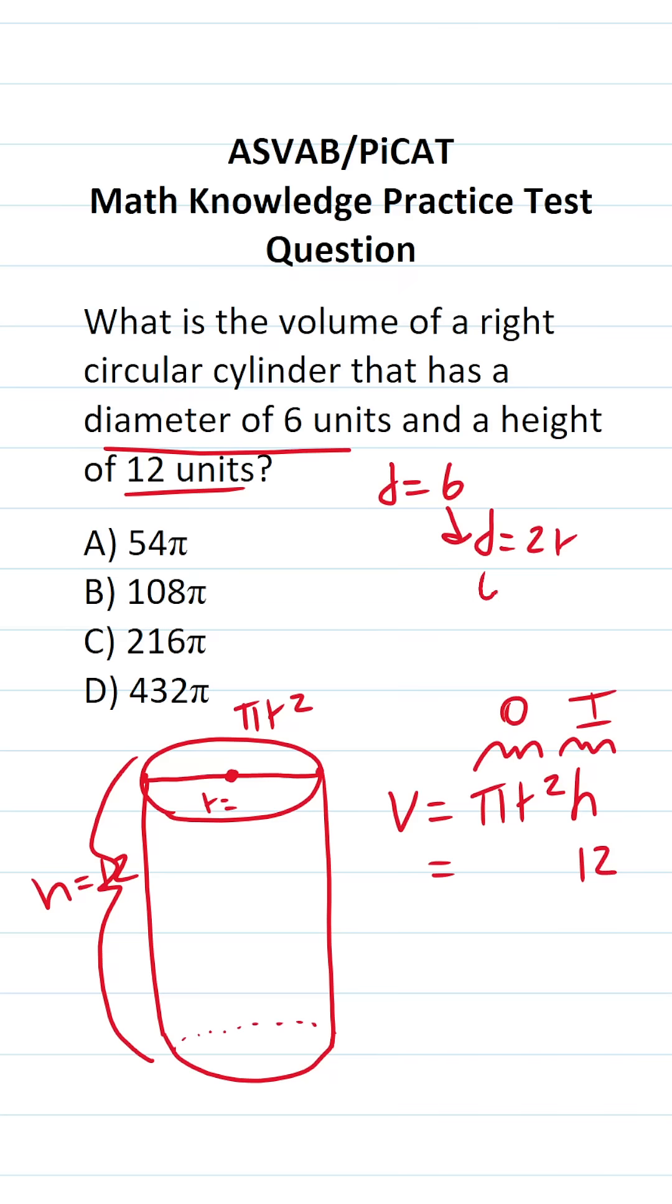So let's plug in six for d. This becomes six equals two r. We divide both sides of this equation by two. This says r equals six divided by two, which is three. So we know the radius of our circular face is three.